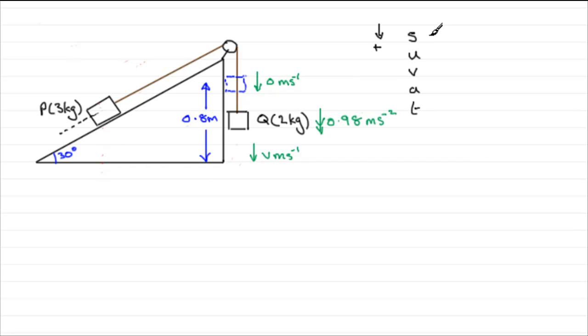So what is S? Well, S is going to be a displacement of 0.8 meters. So we'll have that then as 0.8 meters. U is going to be clearly the initial velocity, which is 0 meters per second. The final velocity, well, we need that. That's what we want to find. Acceleration was downwards, 0.98 meters per second per second.